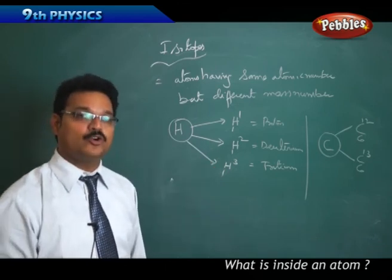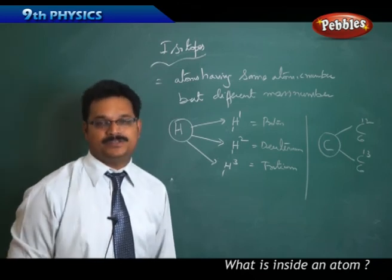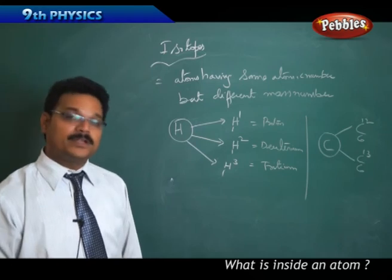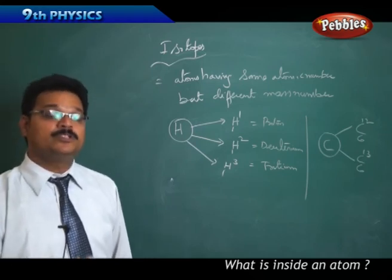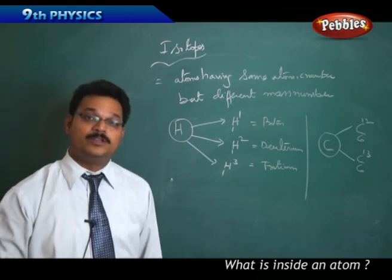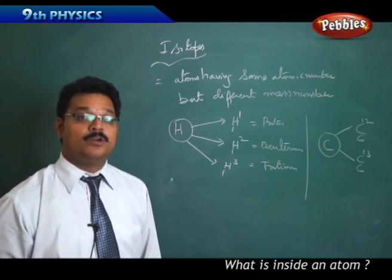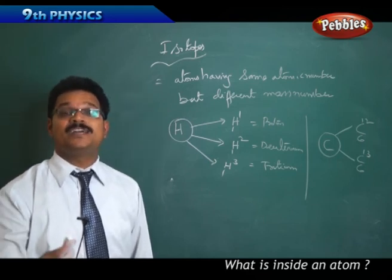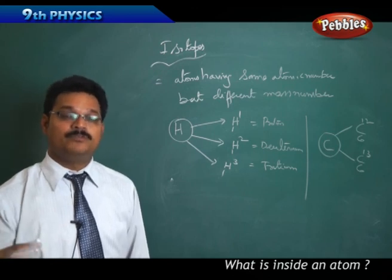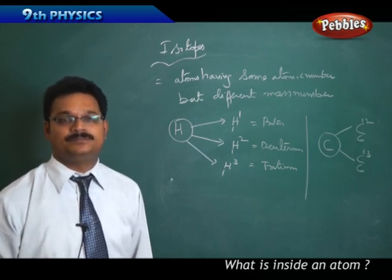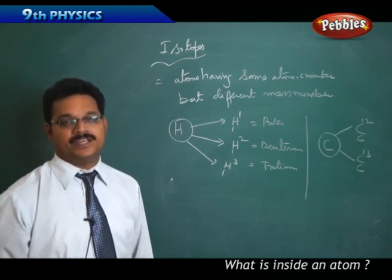Isotopes have many advantages. They help us understand the different steps involved in chemical reactions. For example, uranium isotopes are used in nuclear reactors to produce nuclear energy. Cobalt isotopes are used in radiation therapy for the treatment of cancer. Isotopes are very important in both chemical and physical reactions.